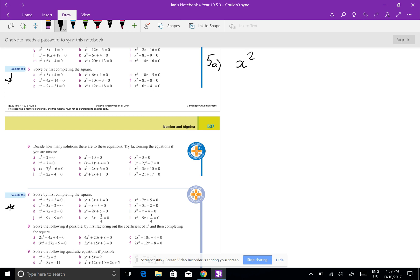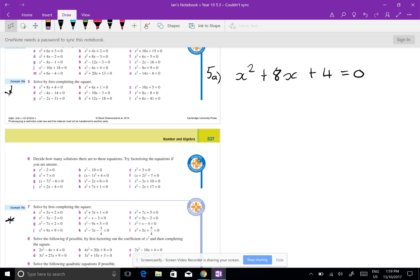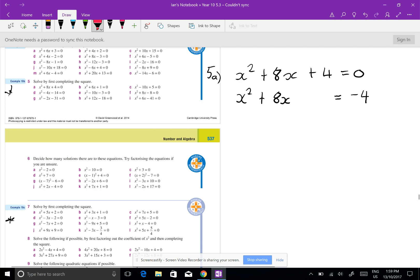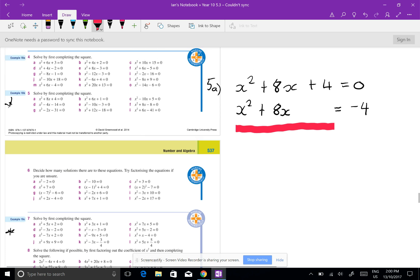So this is 5a: x squared plus 8x plus 4 equals 0. I can't think of anything that's going to multiply up to 4 and add up to 8. So what I do is I take that 4 over the other side. x squared plus 8x, I leave a space, and I've got negative 4. Now what I want to do here is I want to have a perfect square.